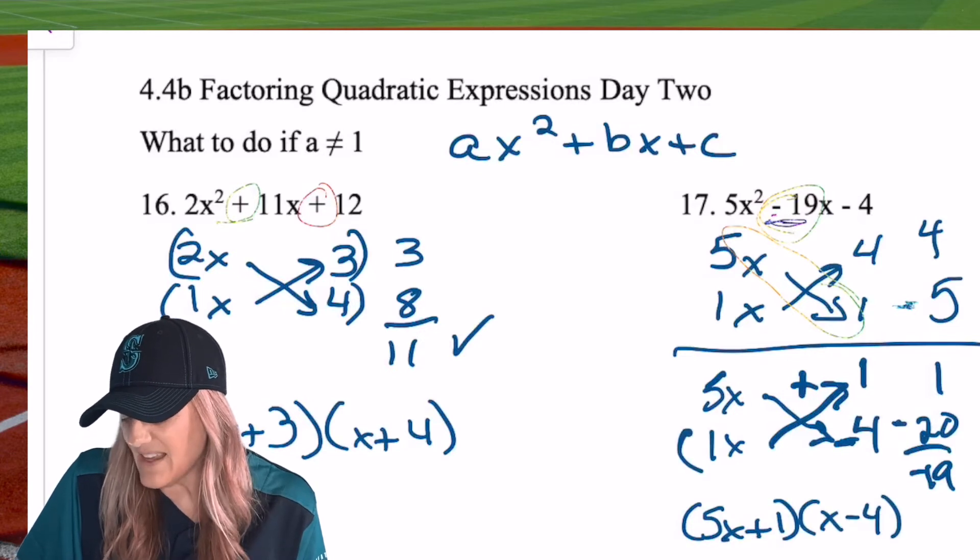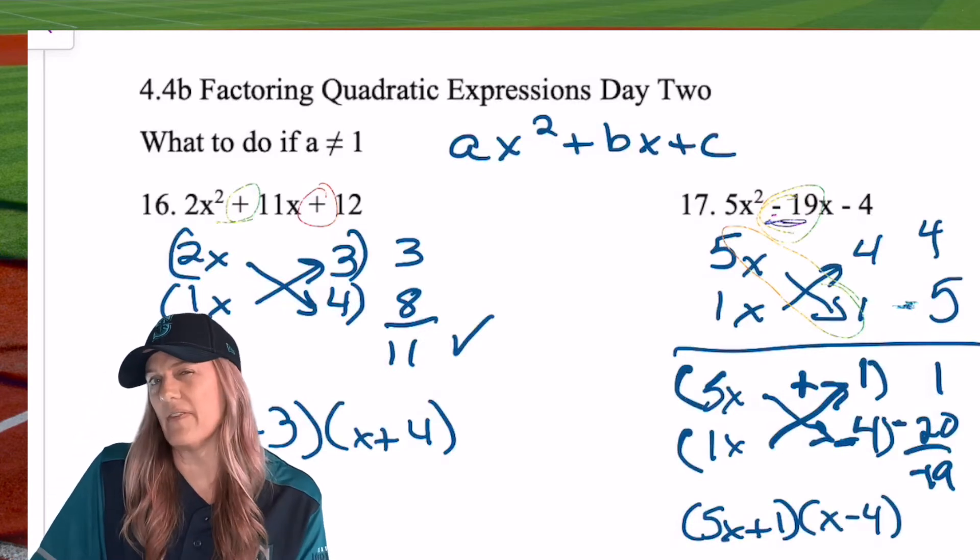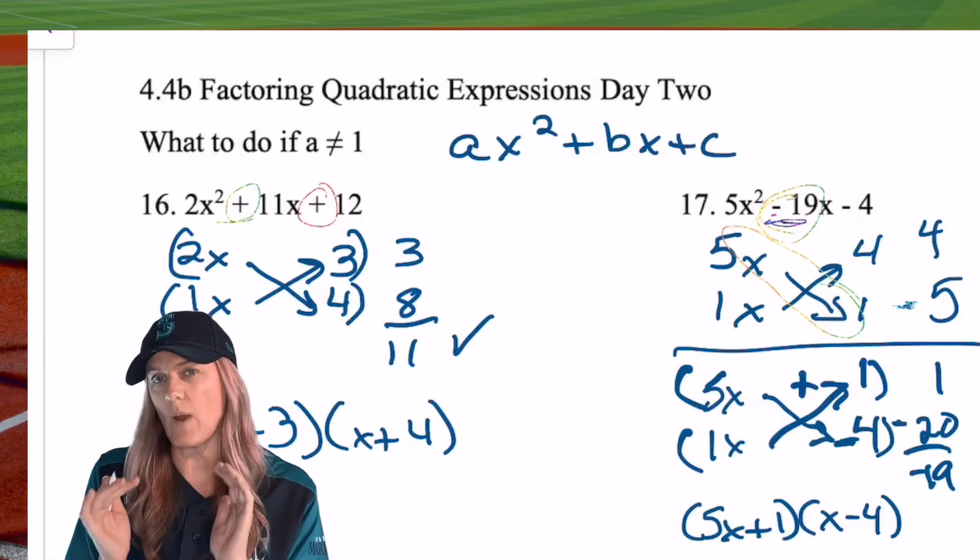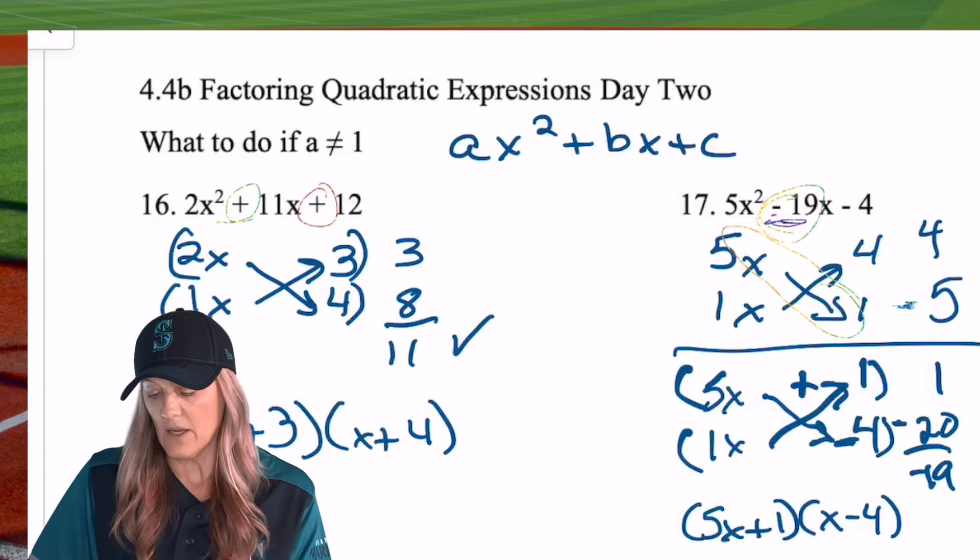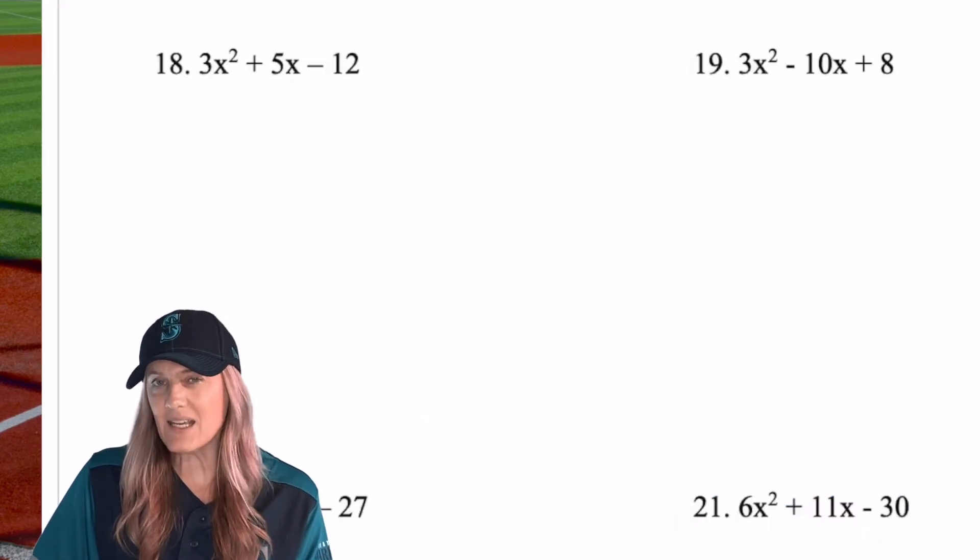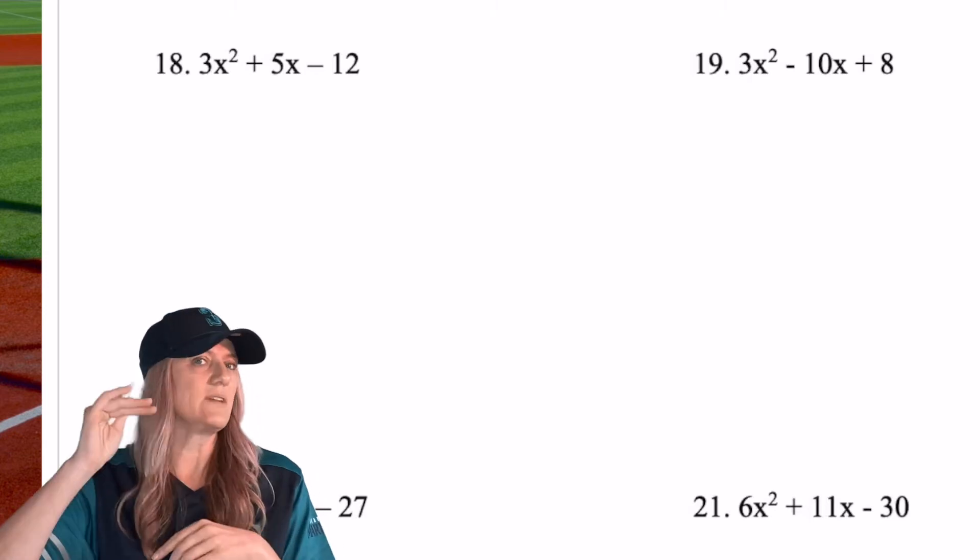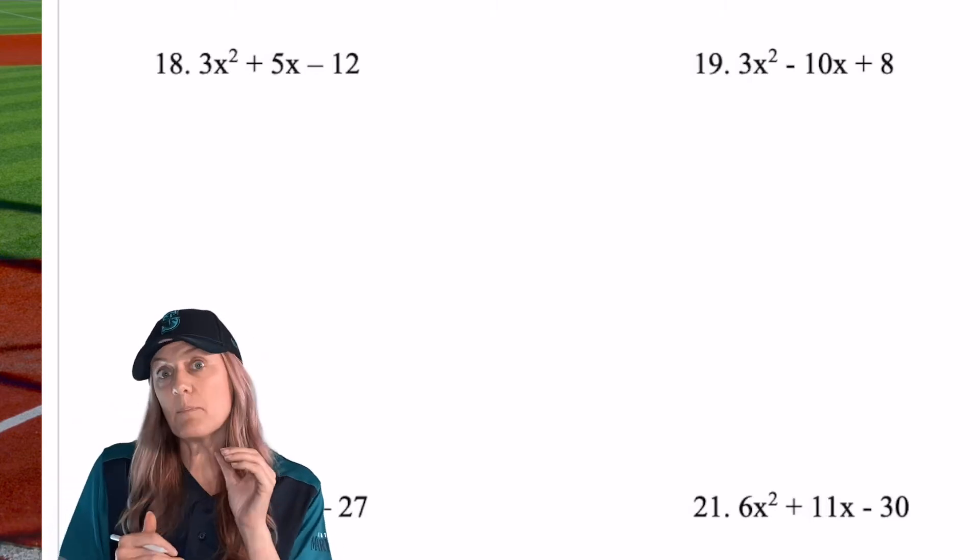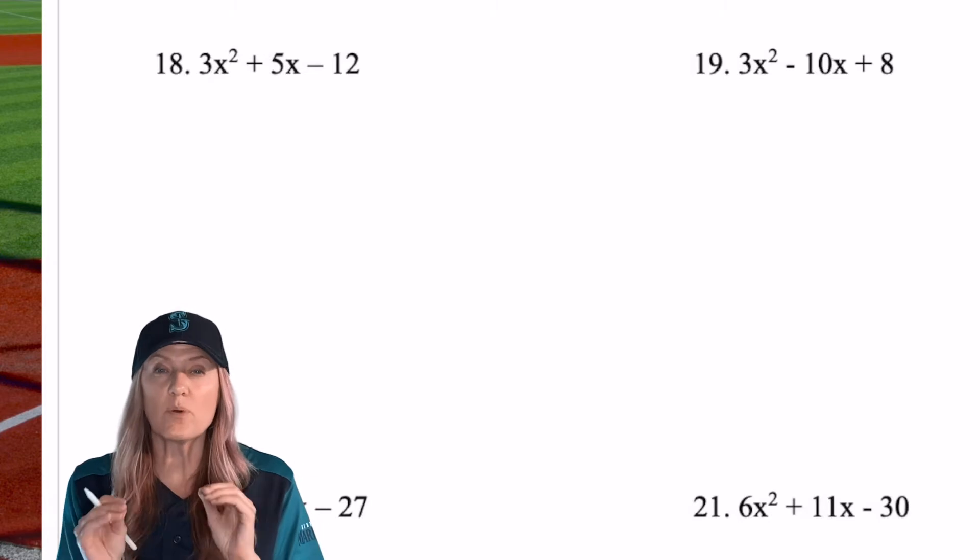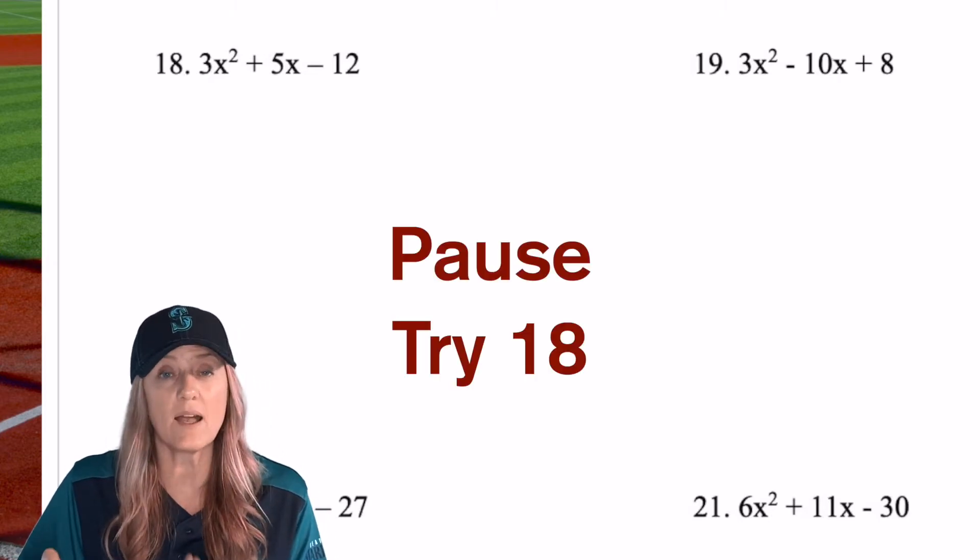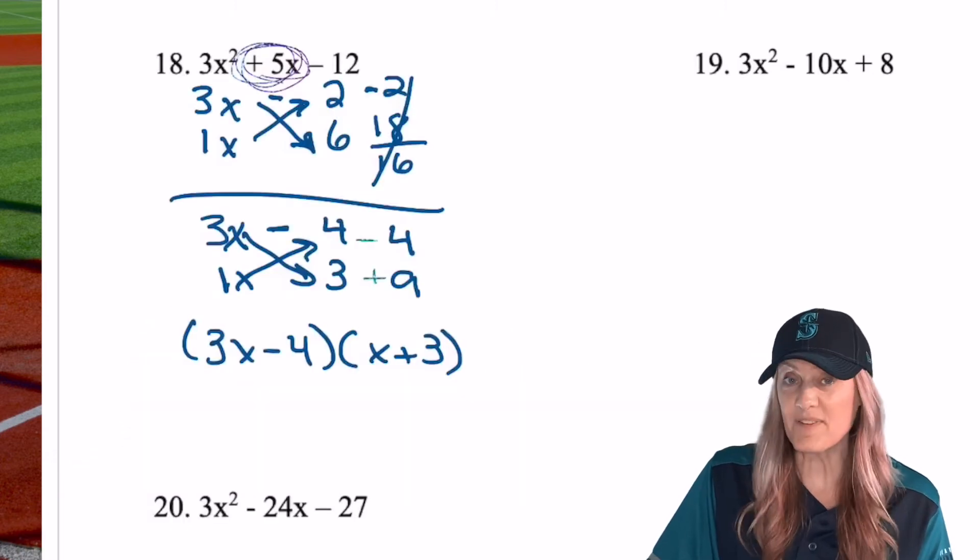Be careful on that because I think a lot of stuff was going on there and I don't want you to make any little mistakes. Remember those parentheses go right around it and then we rewrite it. Okay, what do you think about number 18? 18, I want you to maybe try yourself. c is negative, so we have negative and positive. b is positive, so then the larger product needs to be positive. How about you pause it, try, come back and check. Did you get that? I hope so.